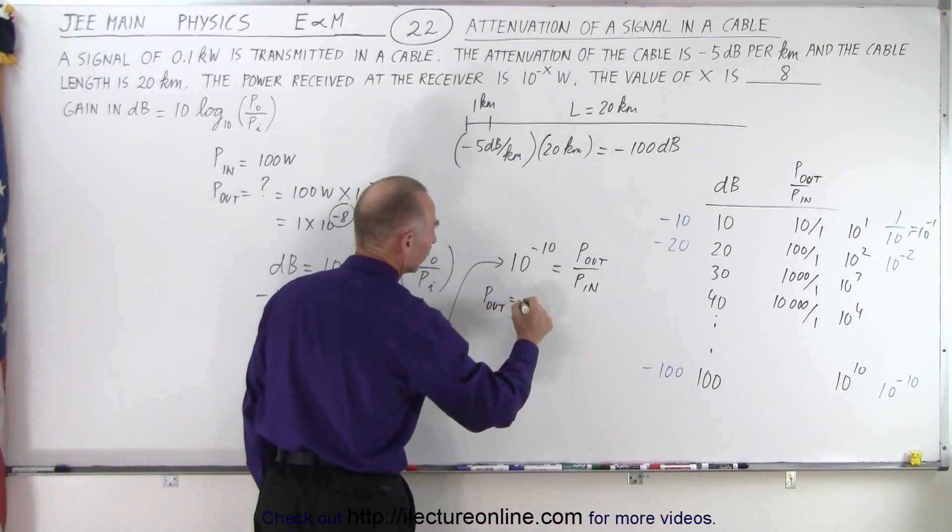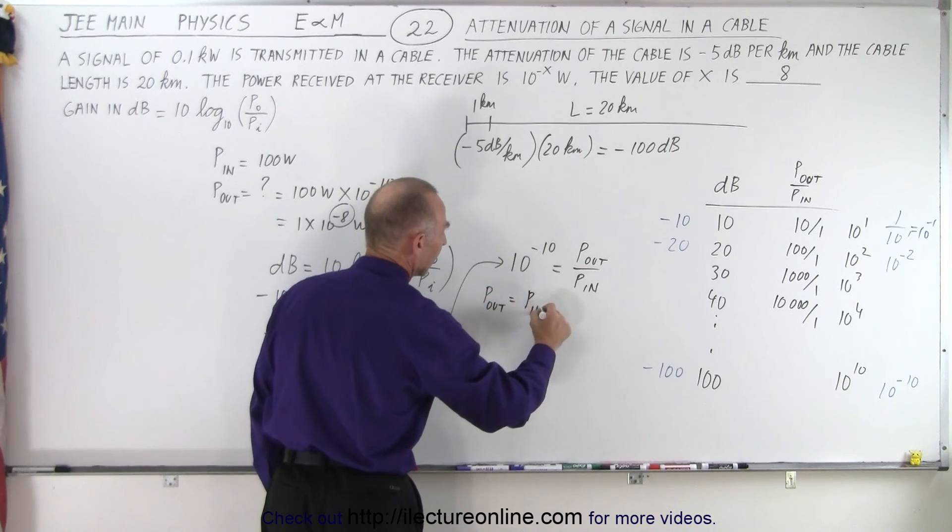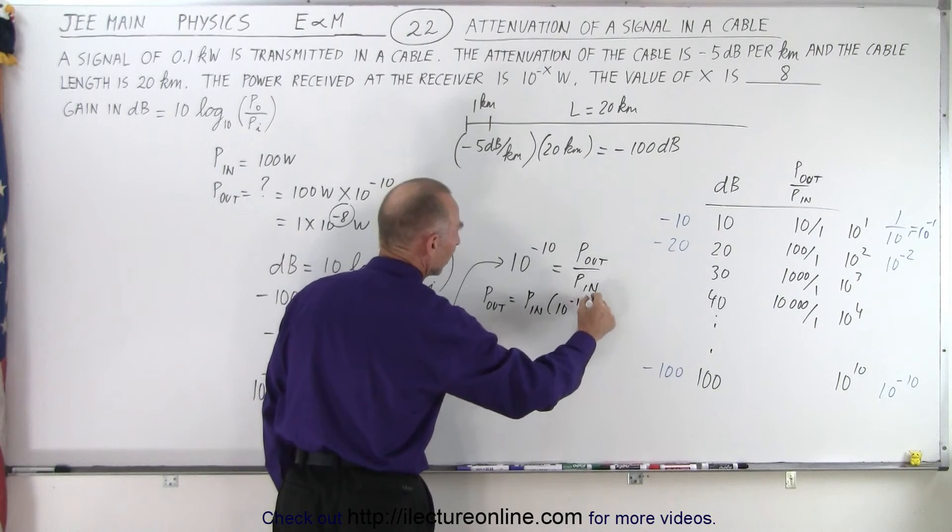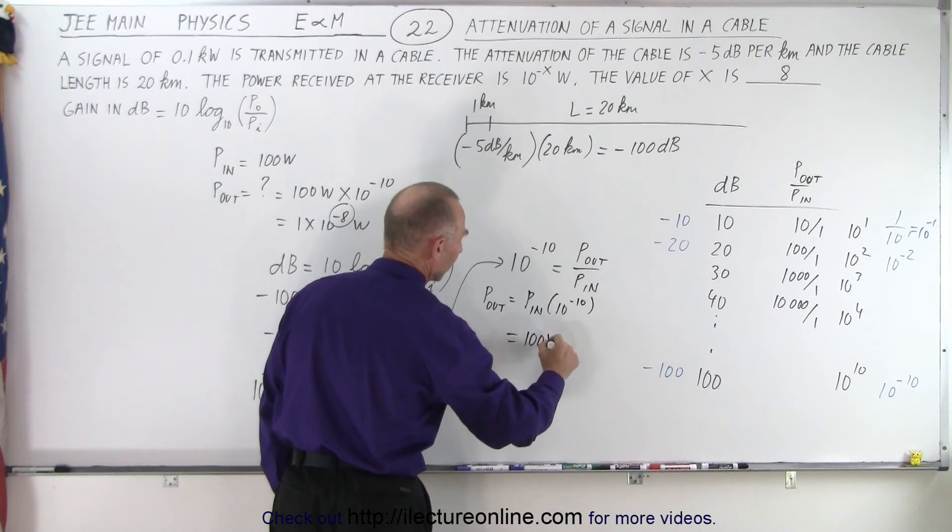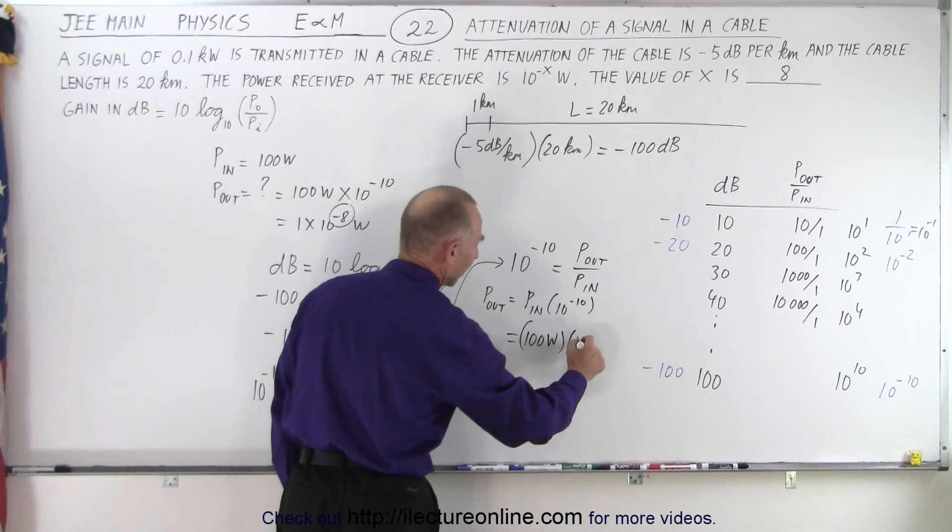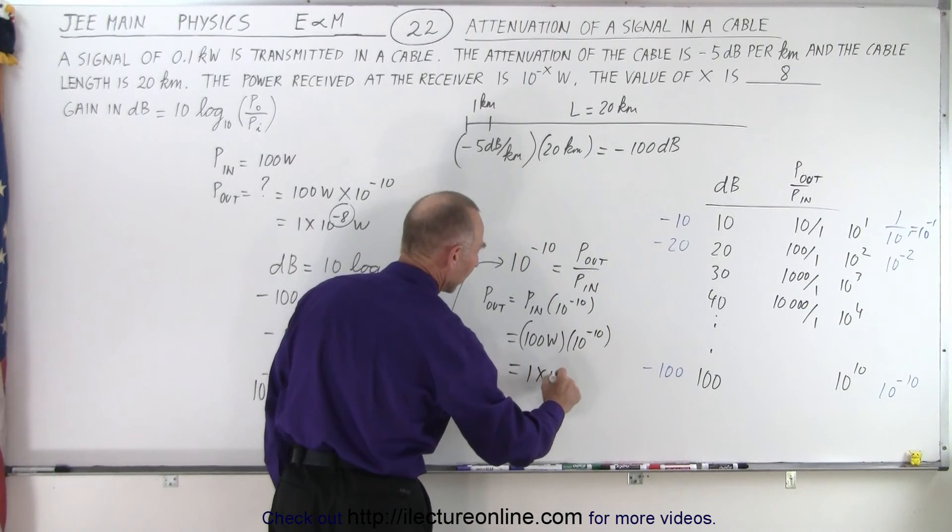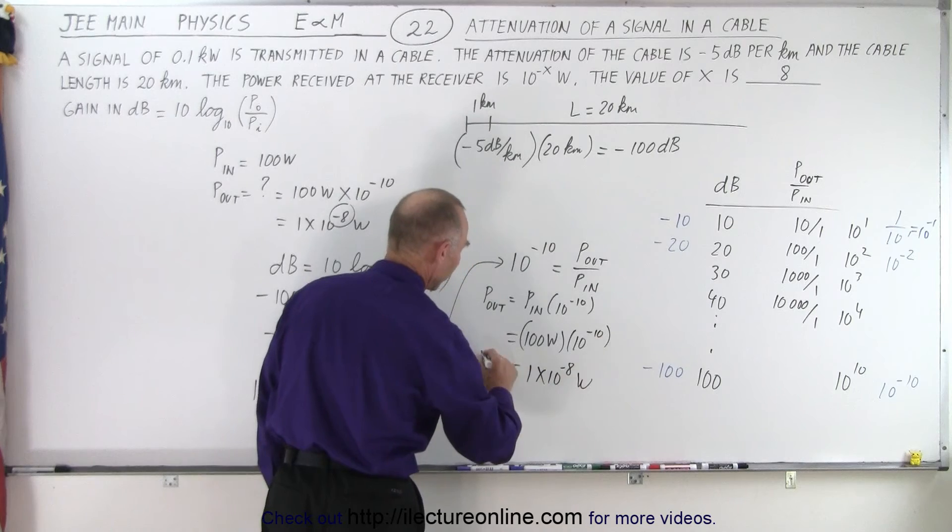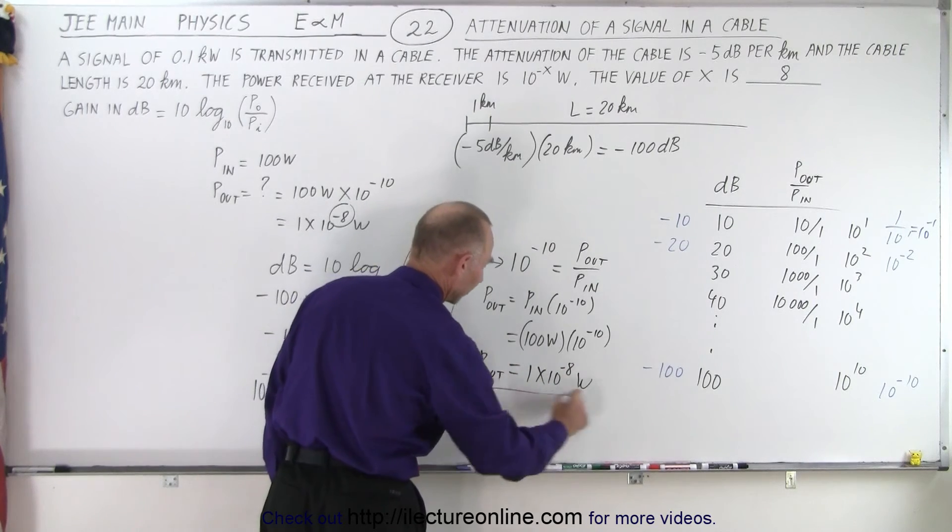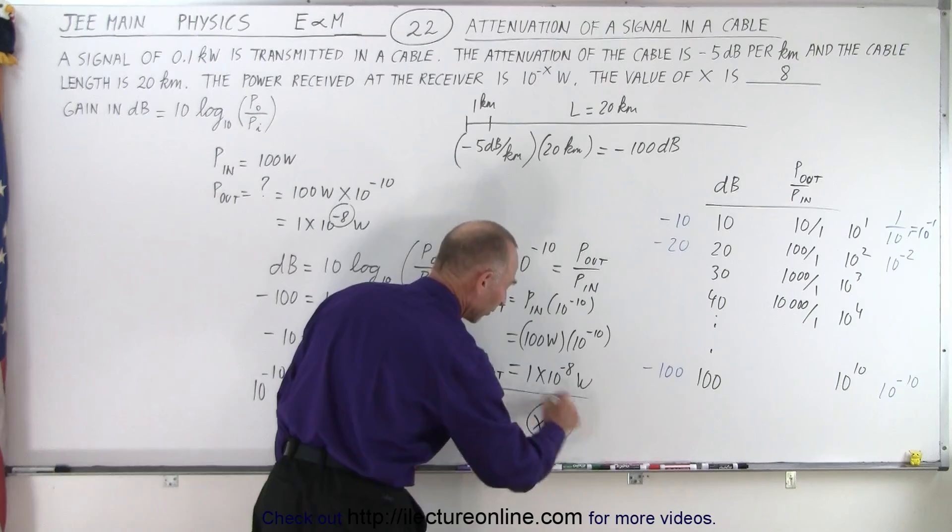We can simply say that P_out equals P_in times 10^(-10). P_in was 100 watts, multiply that times 10^(-10) which means this is 1 times 10^(-8) watts P_out. You can see we got the same answer and therefore x equals 8.